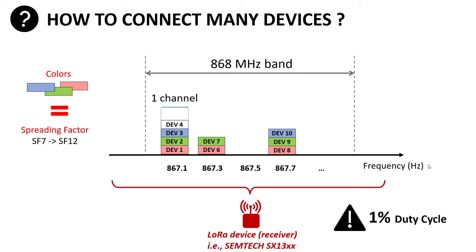Now that you can transmit on all channels with all spreading factors, the only condition is that the receiver must be capable of receiving on all spreading factors and all channels simultaneously. It's not a simple transceiver — it's what we call a baseband processor.